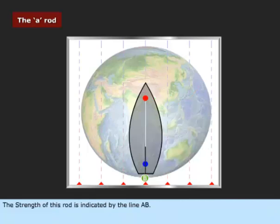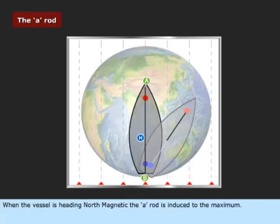The strength of this rod is indicated by the line AB. When the vessel is heading north magnetic, the A rod is induced to the maximum.